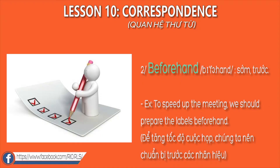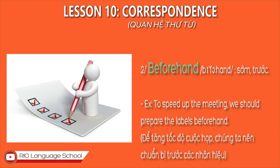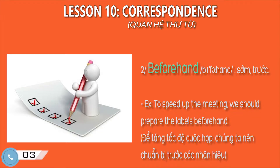Word 2: Beforehand. Từ này có nghĩa là sớm trước, tương đương với 'in advance'. Ví dụ như bạn phải đặt phòng trước 2 tuần trước khi đến ở. Example: To speed up the meeting, we should prepare the labels beforehand.